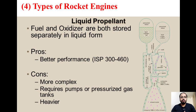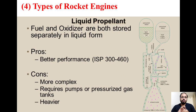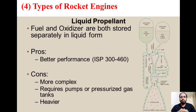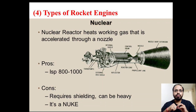In a liquid propellant rocket engine, fuel and oxidizer are both stored separately in liquid form. The advantages are better performance with specific impulse of approximately 300–460. The disadvantages are that it is very complex in terms of placement and storage, requires pumps and pressurized gas tanks to store the liquid propellants, and is heavier compared to other categories of rocket engines.